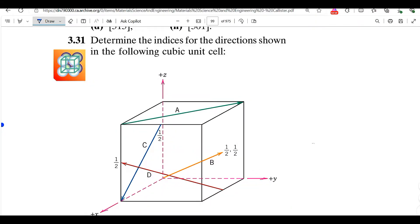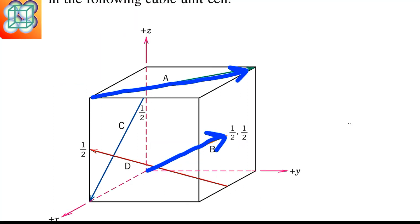Hello everyone, in this video we'll be finding out the indices for the directions in the cubic unit cell. We have quite a few directions in this cube and we'll be finding the indices for all of them. In the previous video we calculated the indices for direction A and direction B. In this video we'll find the indices for direction C, and in the next video we'll calculate direction D. Links to all these videos will be in the description and comment section.